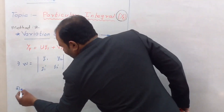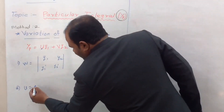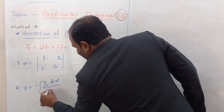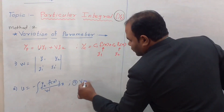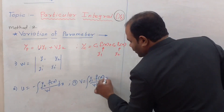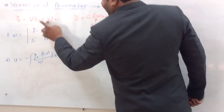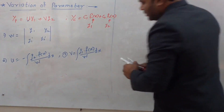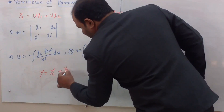Next we find out u and v. The equation for u is minus of the integration of y2 into f(x) upon w, dx. The equation for v is the integration of y1 into f(x) upon w, dx. Once we get the values of u and v, we put them into the equation for yp. This is the equation of yp and this is the equation of yc. Hence, the final solution of the differential equation is y equals complementary function plus particular integral.